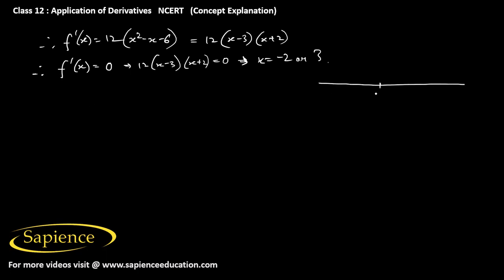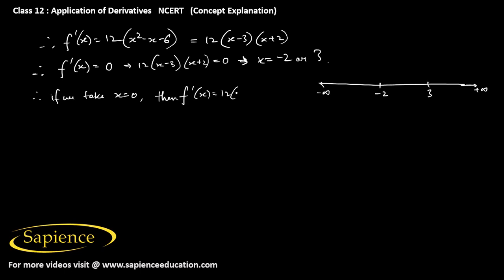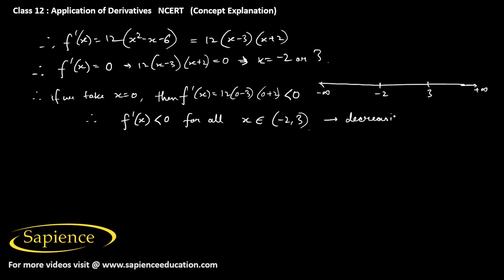Taking these two numbers on the number line: -2 and 3, going to minus infinity and plus infinity. If we take a value in between -2 and 3, say x = 0, then f'(x) = 12(0 - 3)(0 + 2) = -6 × 12, which is less than 0. So f'(x) < 0 for all x in the interval (-2, 3), meaning f is decreasing in this interval.